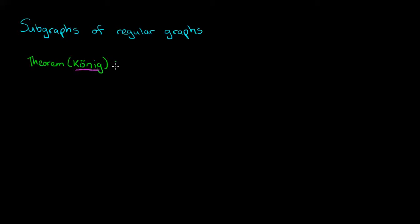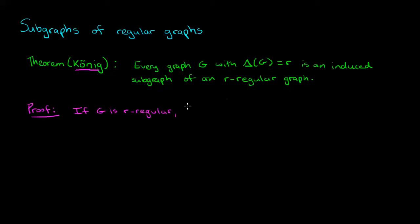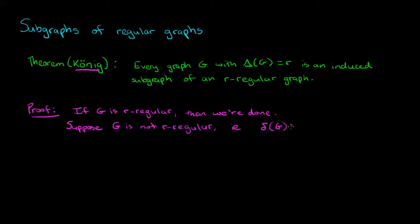The theorem we want to prove is that every graph g with maximum degree r is an induced subgraph of an r-regular graph. The proof is fairly straightforward. First of all, if our graph g is already r-regular, then we are done because it is an induced subgraph of itself. So now let's suppose that g is not r-regular — that means its minimum degree is less than r. Remember that r is the maximum degree.